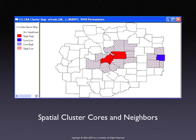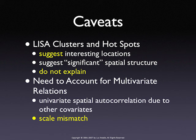One last set of caveats: don't make too much of this. It's exploratory — it is not explaining anything. It suggests interesting locations and potential covariates, but it doesn't prove anything. In fact, it's univariate, and we all know that focusing on one variable in isolation can be highly misleading. We have to keep an eye out for multivariate associations and interactions — that's what we do the regression for.